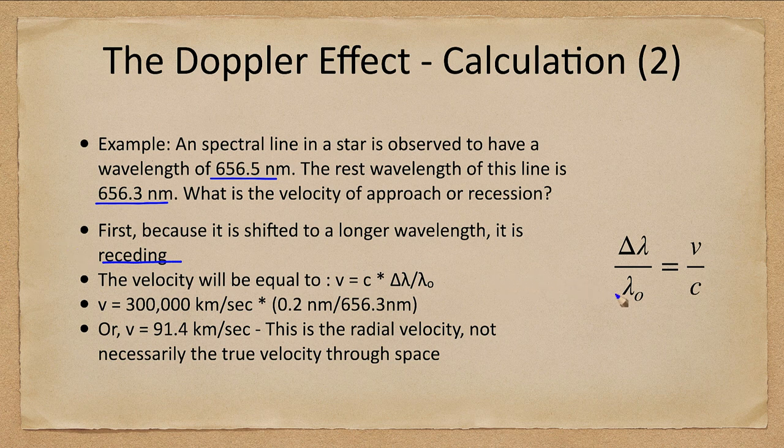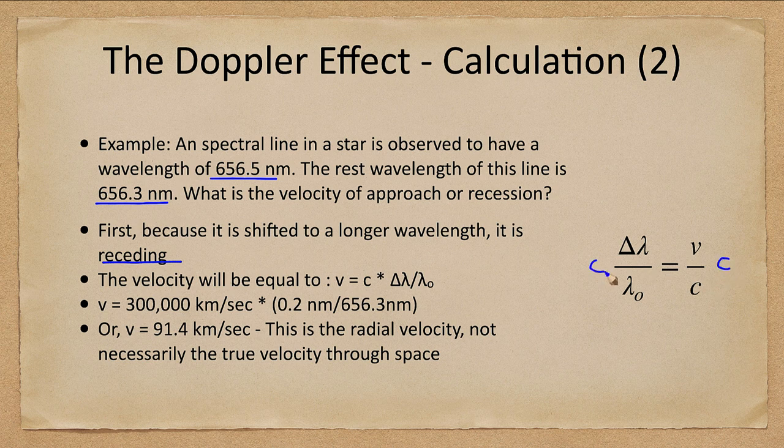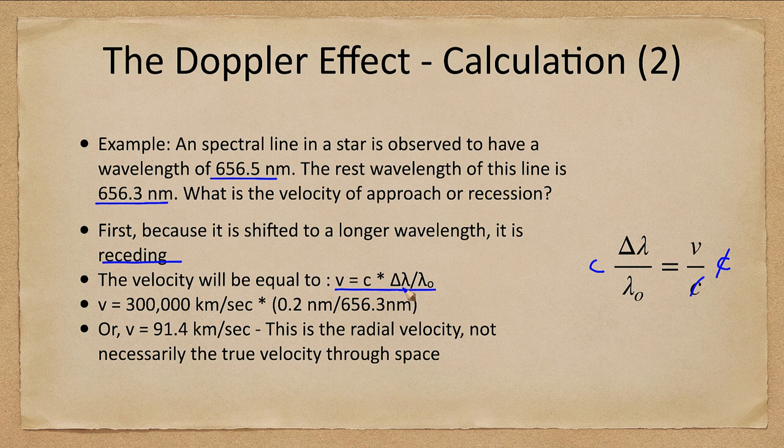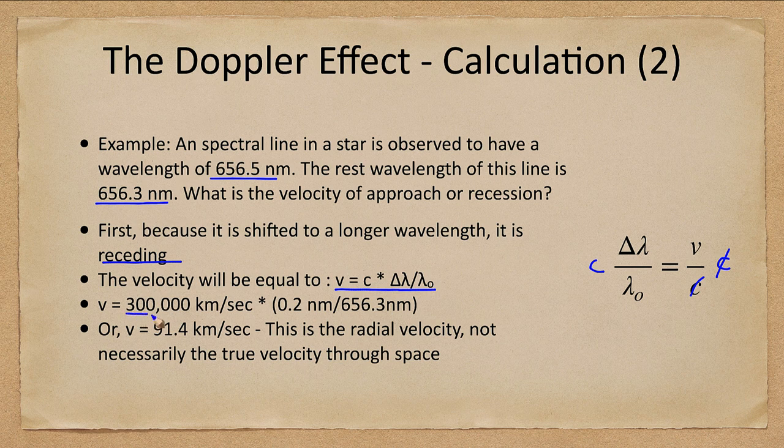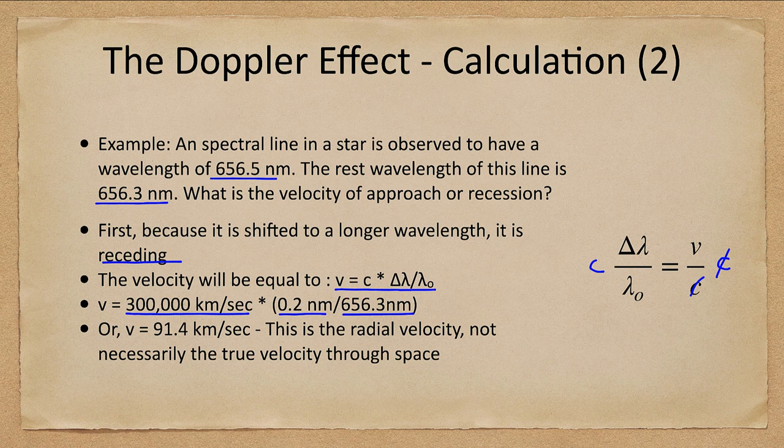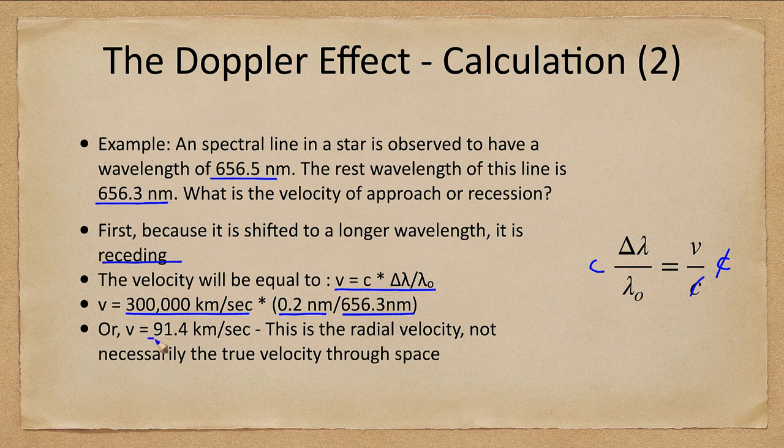Now what we want to do is rearrange this equation to solve for the velocity. If we multiply both sides by C, then the C's cancel on here and we have just an equation for the velocity, which equals C times the change in wavelength divided by the wavelength at rest. V equals, then C is 300,000 kilometers per second times 0.2 nanometers, a very small amount, divided by that rest wavelength of 656.3 nanometers. So those are the values put in.